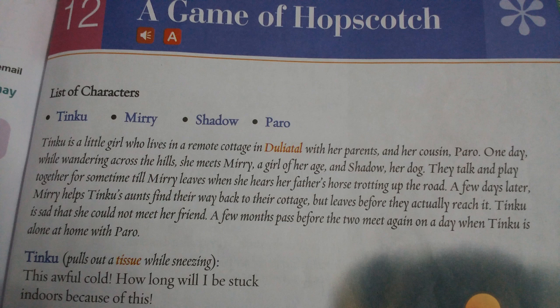Now let us come to the lesson 'The Game of Hopscotch.' What is hopscotch? Hopscotch is a game that small children play — they make squares on the ground and toss a stone or small flat object into the squares and hop on one leg. That is hopscotch — hop means playing by jumping on one leg. So let us see what happens in this game of hopscotch.